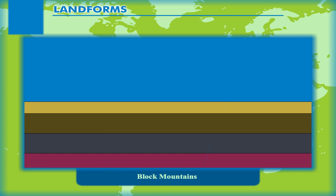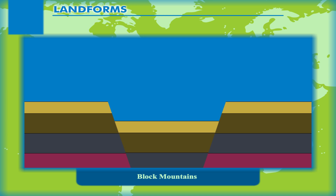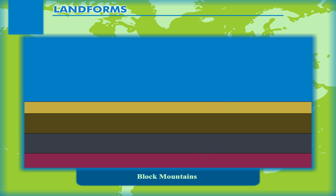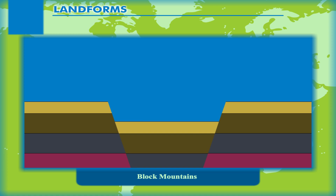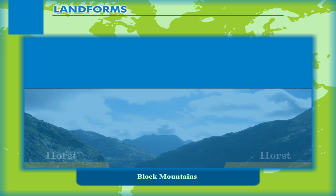Block Mountains are created when large areas are widely cracked or broken up by fault lines and displaced vertically. The uplifted blocks are called Horsts and the lowered blocks are termed as Graben.